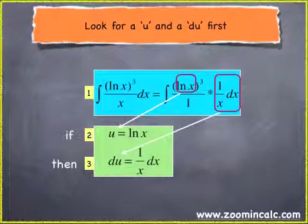And if you look to the right on the other side of your equal sign, I've rewritten this integral where I've separated out the natural log of x cubed and then the 1 over x dx I've put separately so that you can see exactly what you have in this integral. Obviously it's the same integral. I've just written it in a different way.